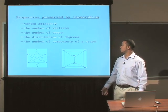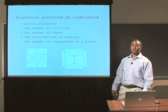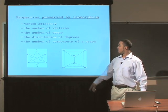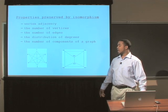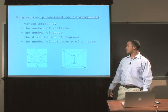We have the distribution of degrees. We have the number of components of a graph — the left graph has one component, as well as the right.